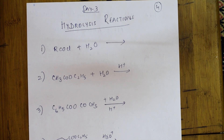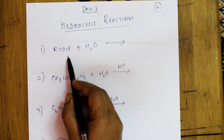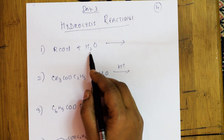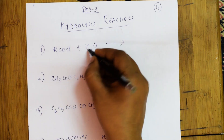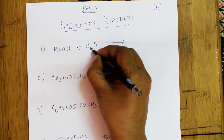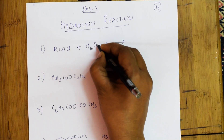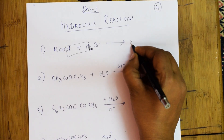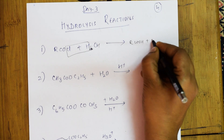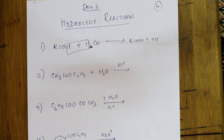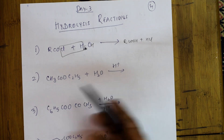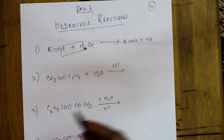In this reaction, I am given RCOCl — acyl chloride — and water. Immediately, take out this water and write it as H–O–H. There is no big logic. This is going to form acid plus HCl. Done. You are lysing the HCl and combining — that is hydrolysis. In the second case, they have given you H⁺ ion.